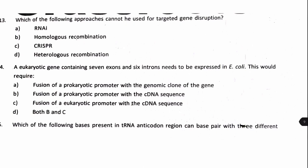Next question: which of the following approaches cannot be used for targeted gene disruption — RNAi, homologous recombination, CRISPR, or heterologous recombination? RNAi is famously used for targeted gene disruption. Homologous recombination and CRISPR are also used for gene disruption. However, heterologous recombination cannot be used for targeted gene disruption. Answer: option D.